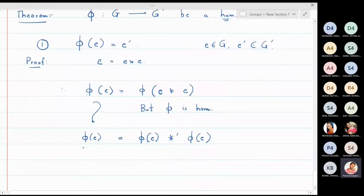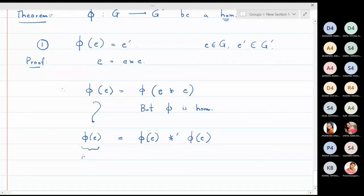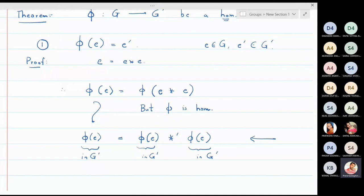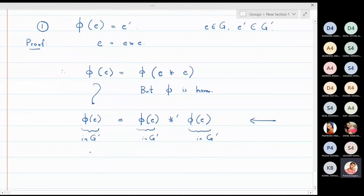Now, e is in G, so φ(e) is an element in G'. This line is entirely within the set G'. The identity element of G' is e', so we can replace φ(e) on the left-hand side by e' ⋆' φ(e), giving us e' ⋆' φ(e) = φ(e) ⋆' φ(e).